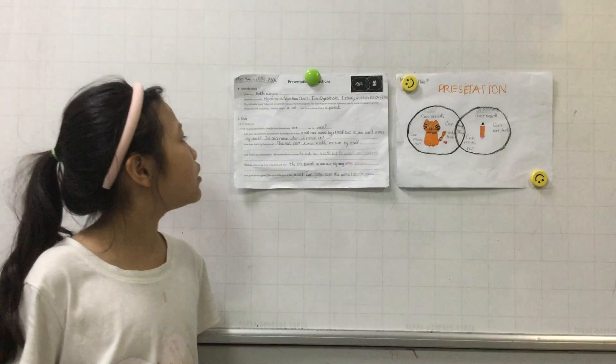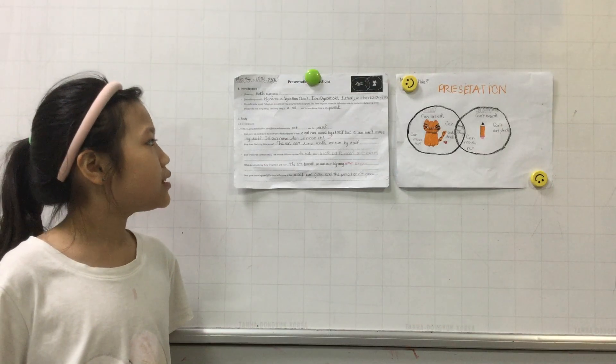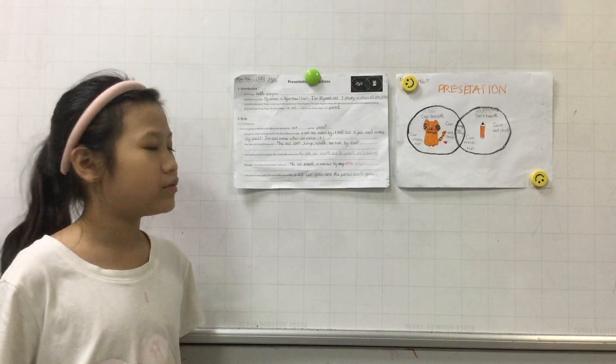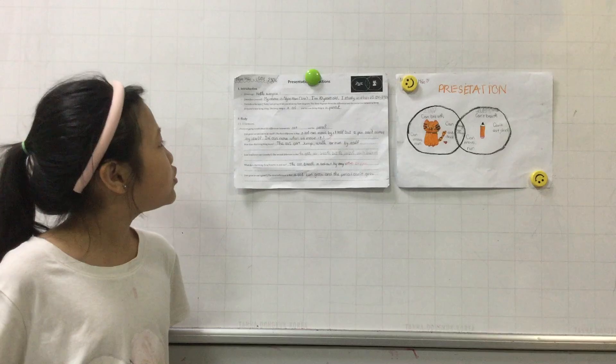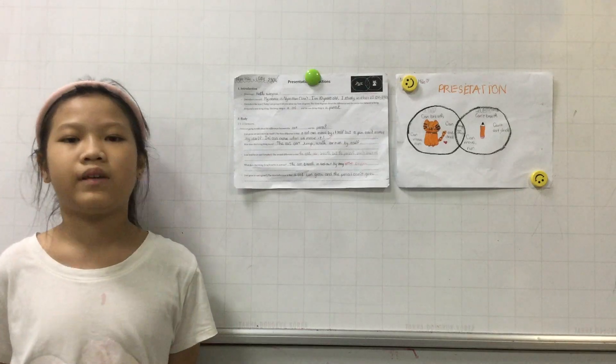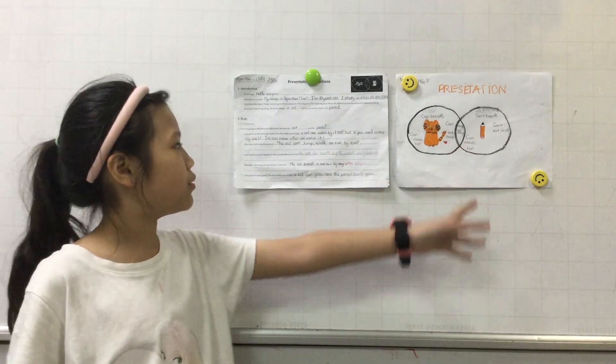Today I will talk to you about my Venn diagram. This Venn diagram shows the difference between a living thing and a non-living thing. The living thing is the cat and the non-living thing is the pencil.